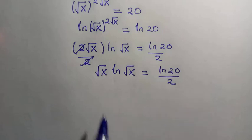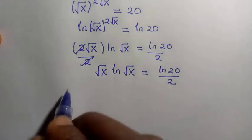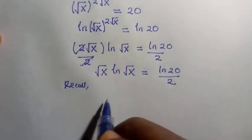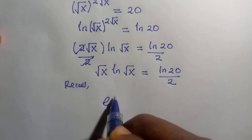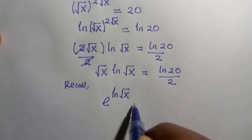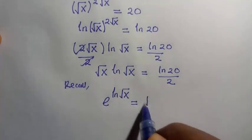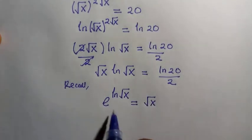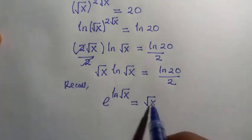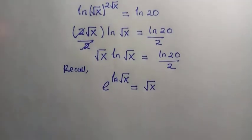So if this is what we have, I'm going to recall that, suppose we have exponential of ln root x, this is the same thing as root x. Because exponential and ln, they are inverse to each other. They cancel and so we have this back.